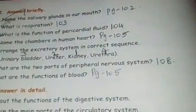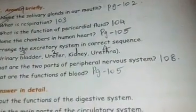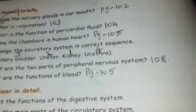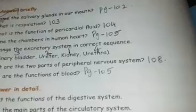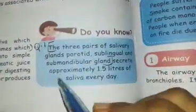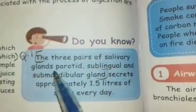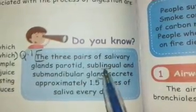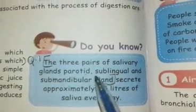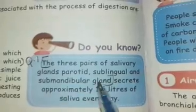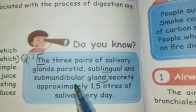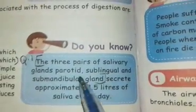Answer briefly. First question: name the salivary glands in our mouth. Page number two. The answer is: three pairs of salivary glands are parotid, lingual and sublingual, and submandibular glands. Write three lines for the answer.